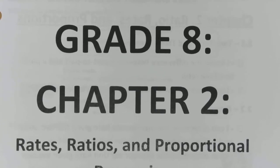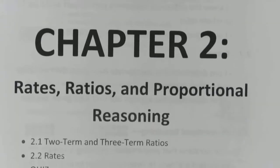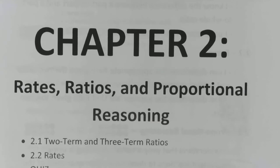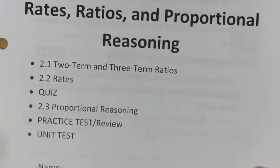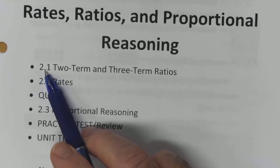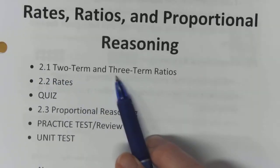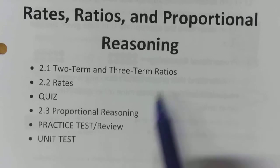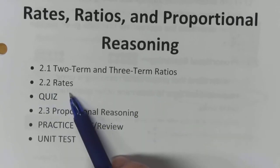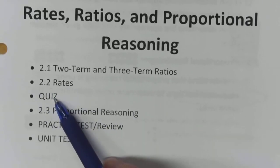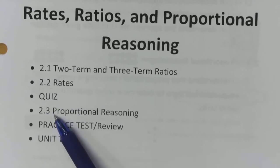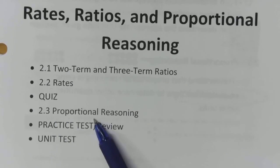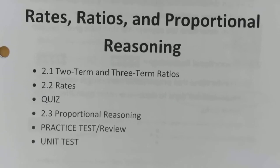Alright, Grade 8, this is the beginning of Chapter 2, and it's entitled Rates, Ratios, and Proportional Reasoning. In this chapter, we have three sections. Section 2.1 is two-term and three-term ratios. 2.2 deals with rates. Then we'll have a little quiz to see how you're doing with those first two sections. 2.3 includes proportional reasoning. Then we'll do some practicing and review, finished up with another unit exam. So that's what Chapter 2 is going to look like.